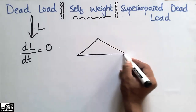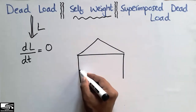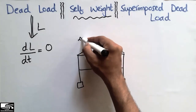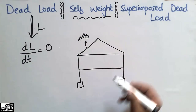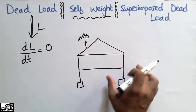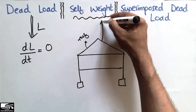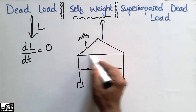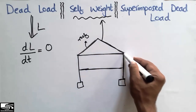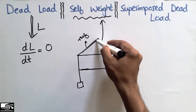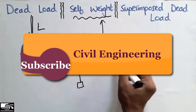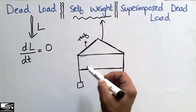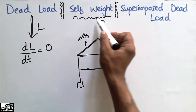For example, if I construct a building — let's suppose this is a building, these are the footings provided for the building, and this is the roof at the top. The own weight of the structure is known as the self weight. These are the columns, these are the footings, these are the beams, and these are the roof trusses. By calculating the load of these trusses, beams, and columns, they fall under the category of self weight.